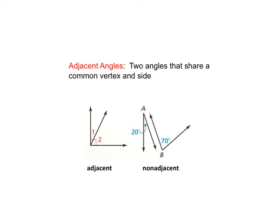Look at the picture here. Angle 1 and angle 2 have a common vertex and have a common side. Angle 1 and 2 are called adjacent angles.